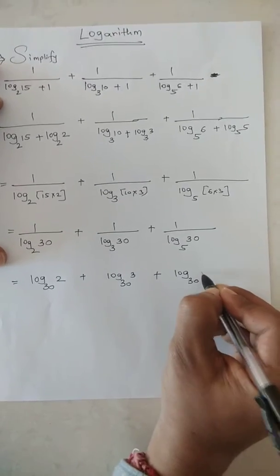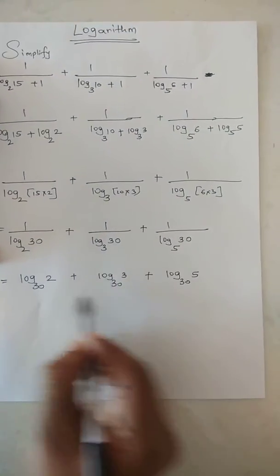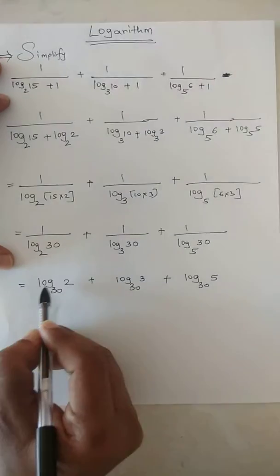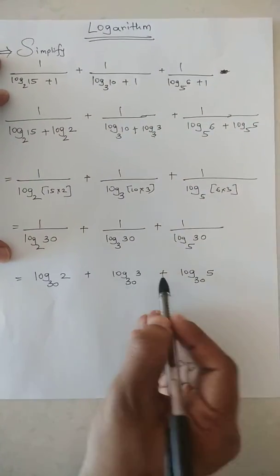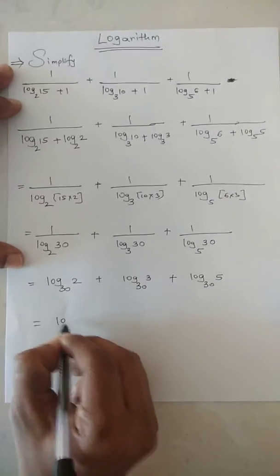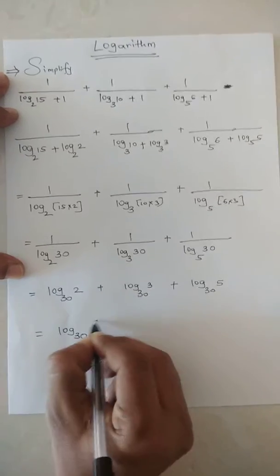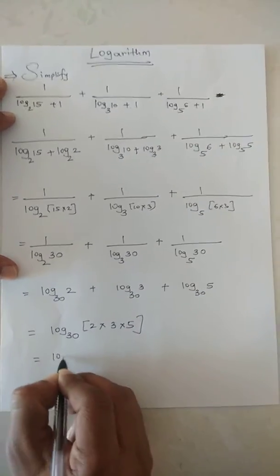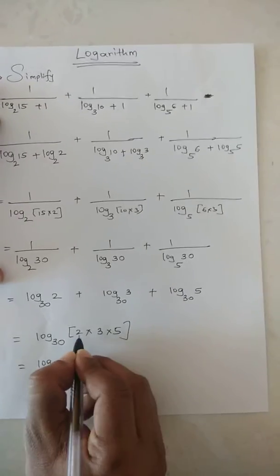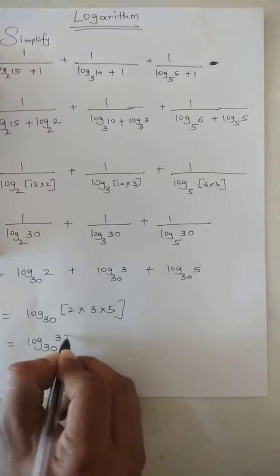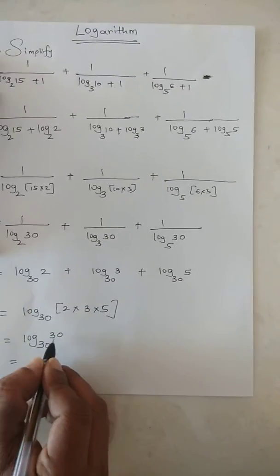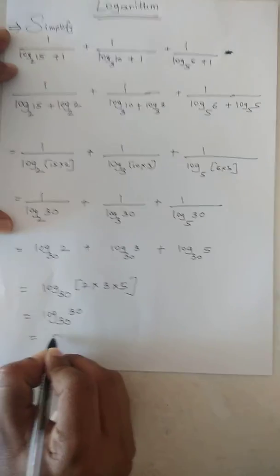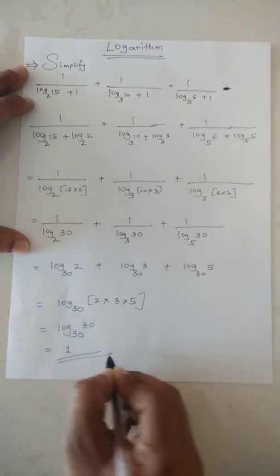which equals log base 30 of (2 times 3 times 5). 2 times 3 is 6, 6 times 5 is 30. So log base 30 of 30 is always equal to 1.